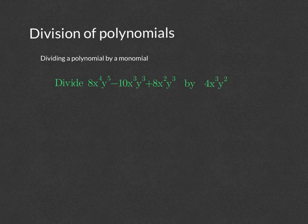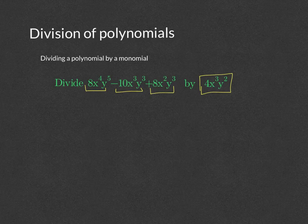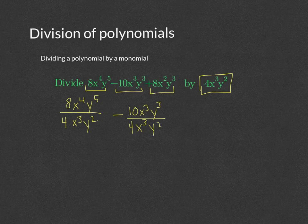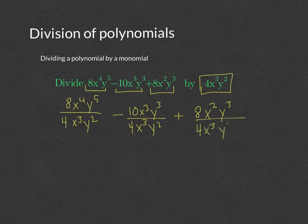When you're dividing a polynomial that has three terms by a single monomial, you're going to take each one of the terms — 8x to the fourth y to the fifth — and divide it by our single monomial term. Then 10x cubed y cubed over 4x cubed y squared, and plus 8x squared y cubed over 4x cubed y squared. We are going to simplify each one of the new terms formed to get our full division.